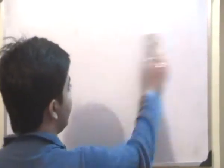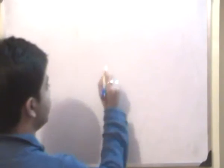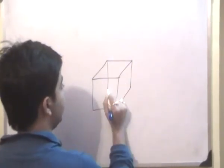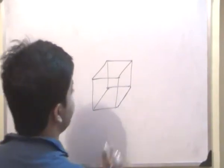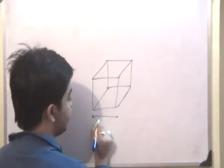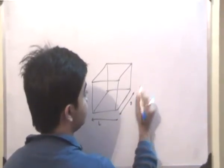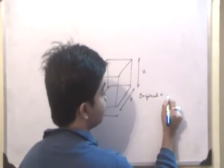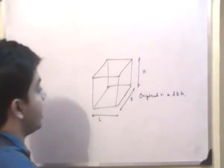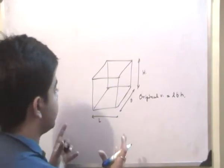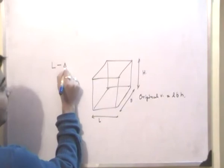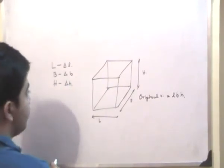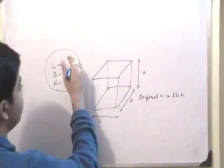Now we will look at volumetric strain and understand what it is all about. We take an element under compressive pressure from all sides. Suppose this is L, this is B, and this is H. So the original volume of this element is equal to LBH. Due to this compressive pressure applied on all sides, L will decrease its length by δL, B will decrease by δB, and H will decrease by δH.